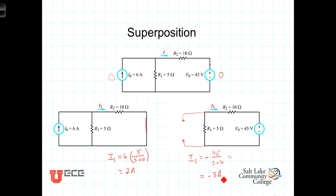Now, we can determine the total I. The total I is just equal to I1, the current due to the current source, plus I2, the current due to the voltage source, and that is equal to 2 amps minus 3 amps equals minus 1 amp.